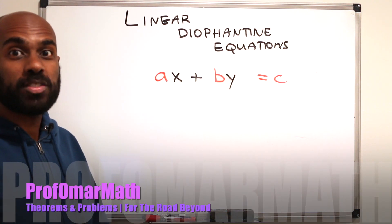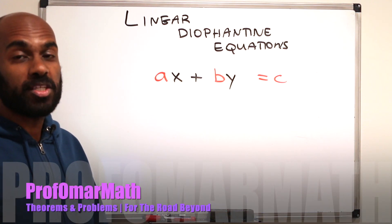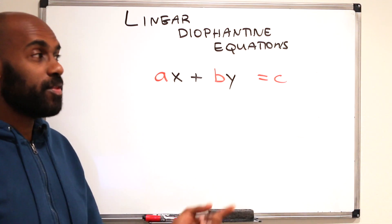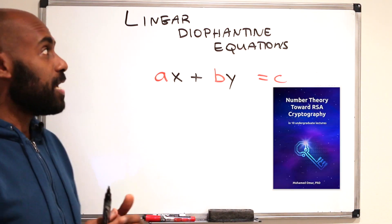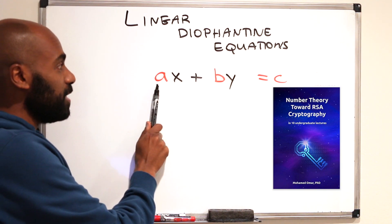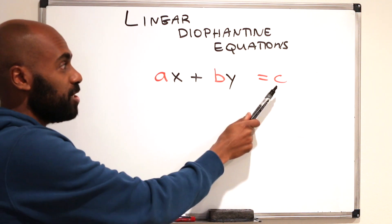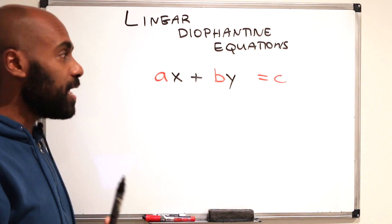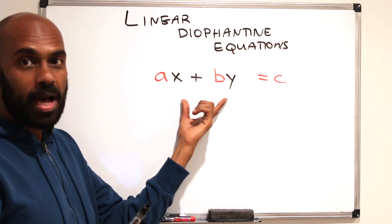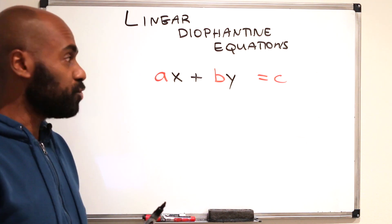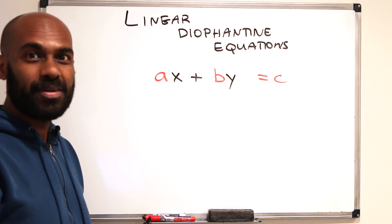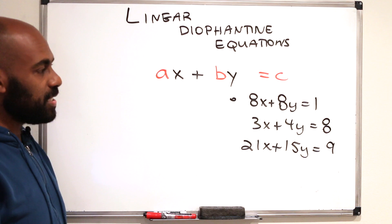This is the third video on our road to the RSA encryption algorithm, part of the discrete math course at Harvey Mudd College. We're following this book, and today we're going to talk about linear Diophantine equations. What we're going to do is, given integers A, B, and C, decide whether or not there are integer solutions for X and Y, and if there are, find the full set of integer solutions.